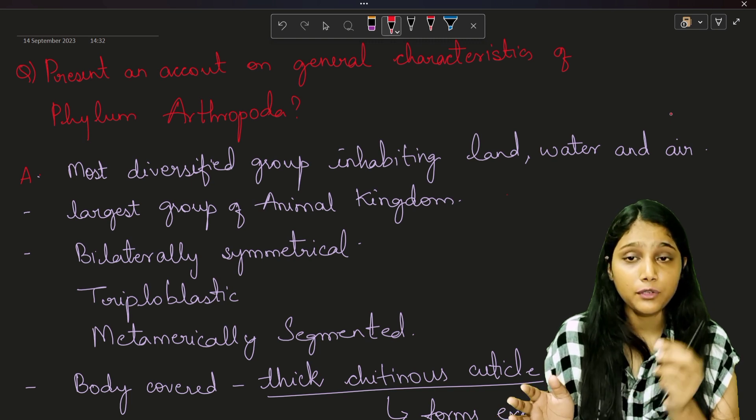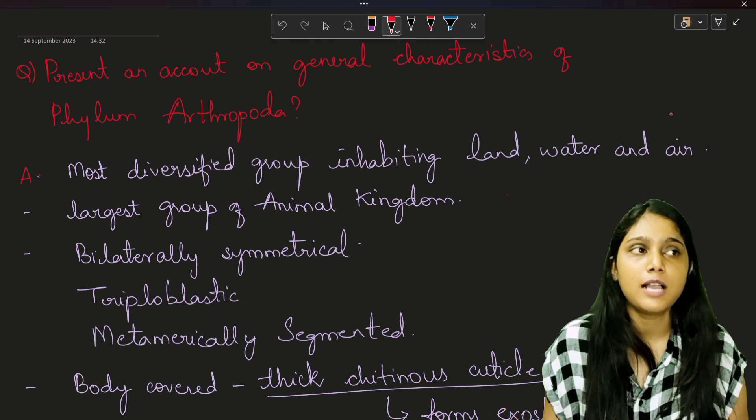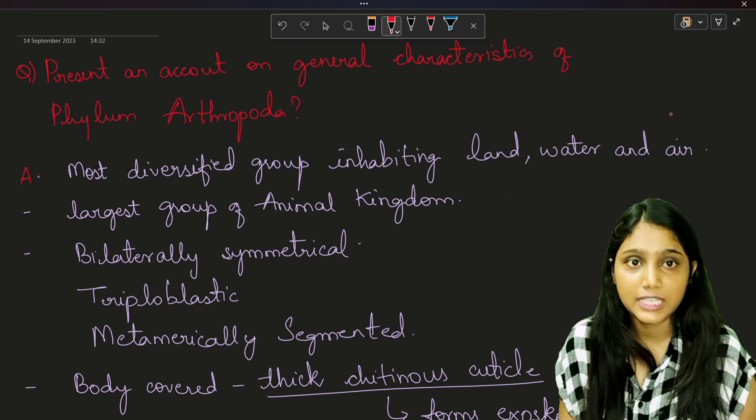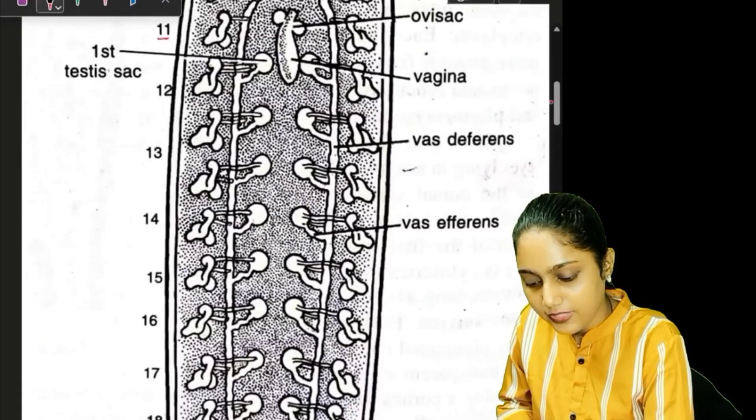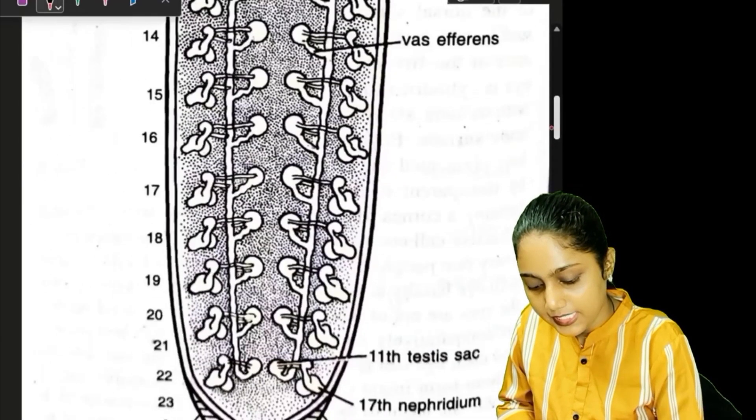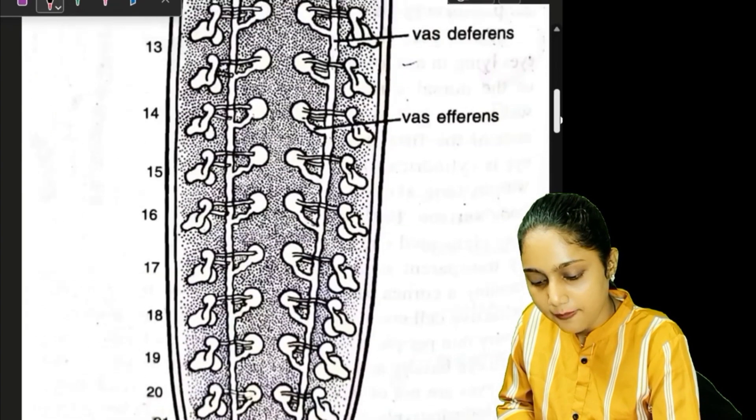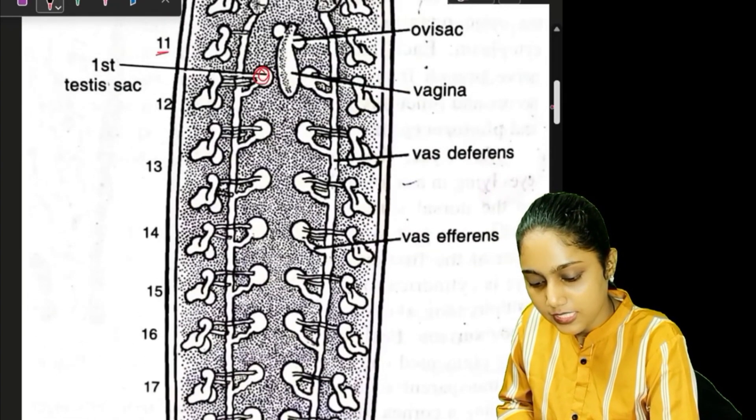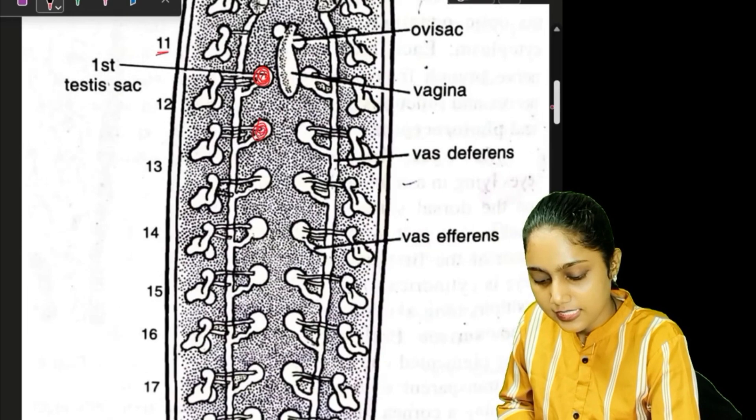Now before starting with this topic, I want to make one thing clear about the last video where we discussed reproduction in leech. Once you see this video, from the 11th segment to the 22nd segment, these are all testis sacks.